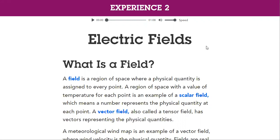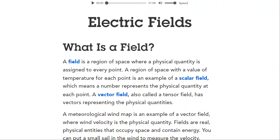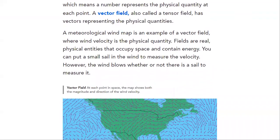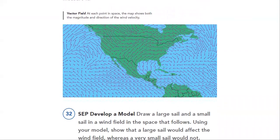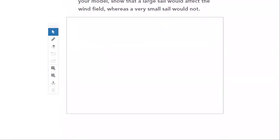What is a field? We will define it. A field is a region of space where a physical quantity is assigned to every point. We will see that field is scalar and vector field. We will explain it throughout examples, as you can see.